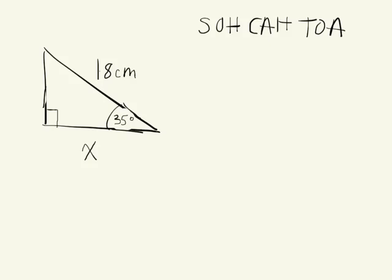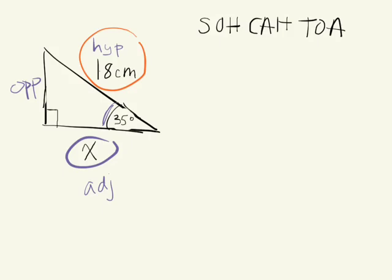You use the trig ratios in order to solve right triangles. This is a right triangle and I'm asked to solve it — I need to find X. First we look at which angle is indicated: 35 degrees. We label our triangle with three side lengths — opposite, adjacent, and hypotenuse — and figure out which ratio to use. We have the hypotenuse and need to find the adjacent side length. Which ratio uses adjacent and hypotenuse? The cosine ratio. I don't know the opposite side length and don't need to find it.